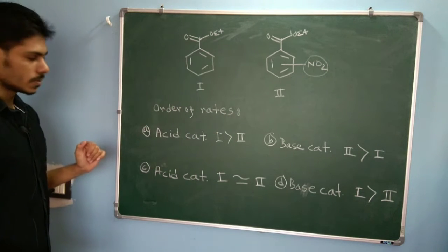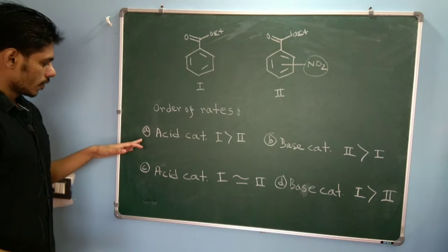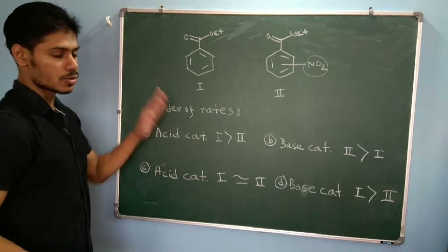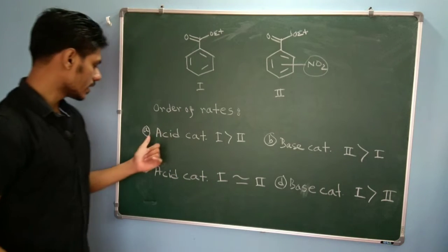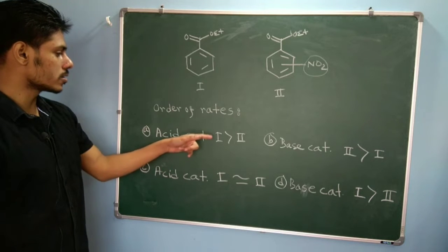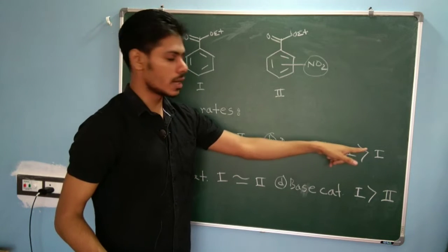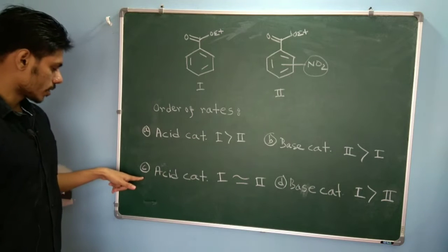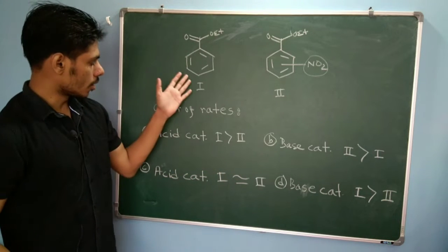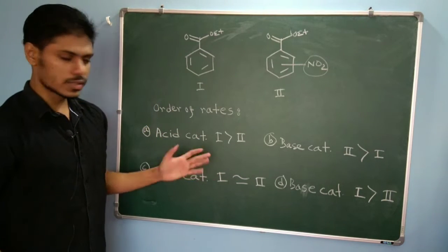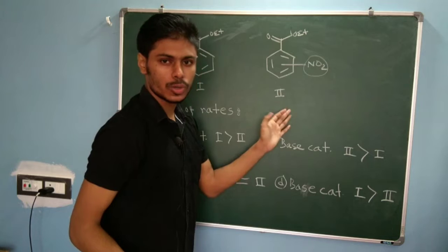The MCQ question asks for the order of rates of these two reactions. Option A says that in acid-catalyzed reaction, the rate of hydrolysis of compound 1 is faster than compound 2. Option B says that in base-catalyzed reaction, the rate of compound 2 is higher than compound 1. Option C says that in acid-catalyzed reaction, the rates of both compounds 1 and 2 are the same. Option D says that the rate of base-catalyzed hydrolysis is faster for 2 and slower for 1.